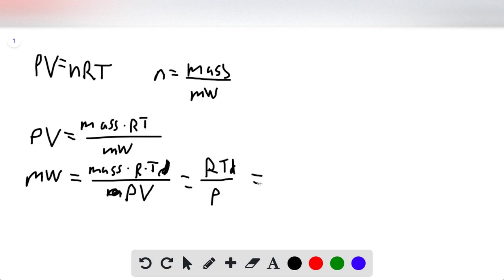We have all of these values. Our R value is 0.082057 liter atmospheres per mole Kelvin times our temperature, which is 298 Kelvin, times our density, which is 0.670 grams per liter.